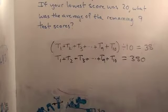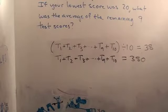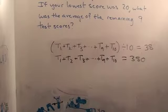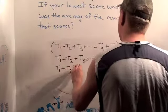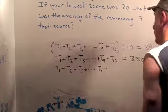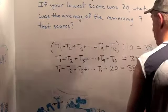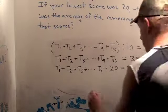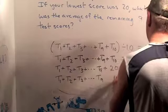So what was the next thing the problem said? It says if your lowest score was twenty, what was the average of the remaining nine? We don't know which one was your lowest, but one of them was twenty and it was the lowest score. Let's just say that was test ten. So test one plus test two plus test three plus test nine, and the score on test ten is twenty — plus twenty equals three hundred and eighty. That means test one through test nine equals three hundred and sixty.